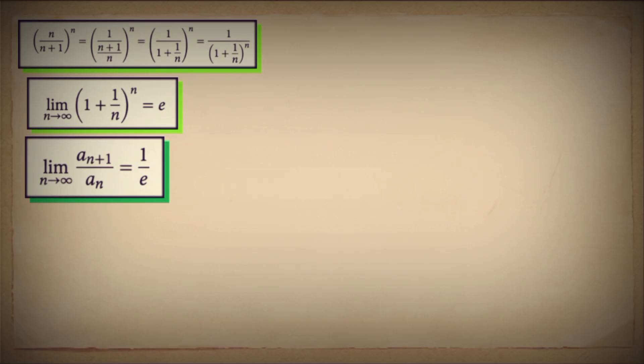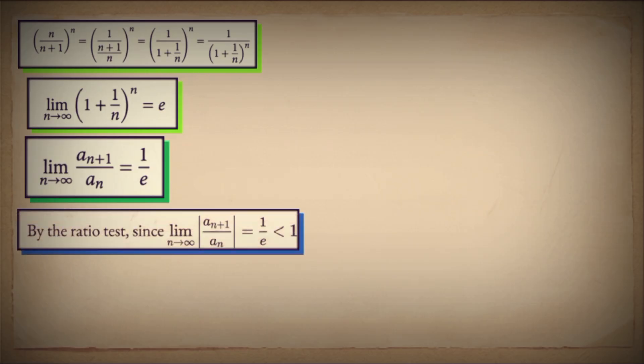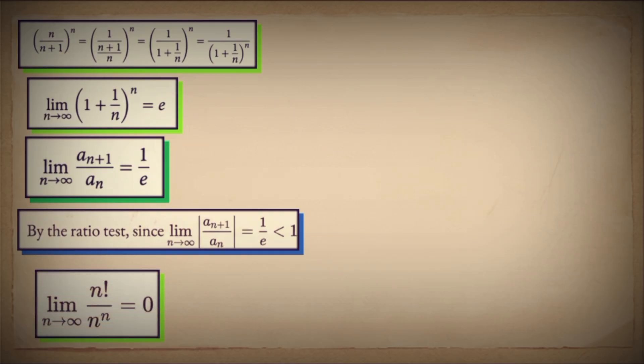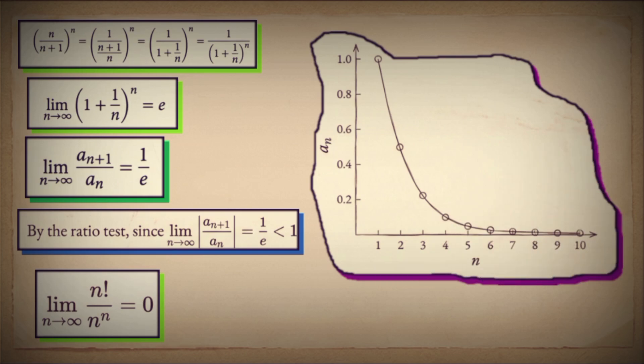What's 1 over e? Approximately 0.3679 — a positive constant strictly less than 1. By the ratio test for sequences, if the limit of the ratio of successive terms is a constant less than 1, the sequence itself must converge to 0, not just because it looks like it should, but because the algebra forces it to.